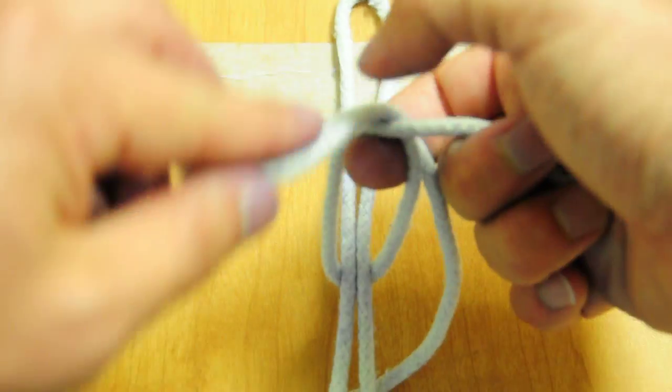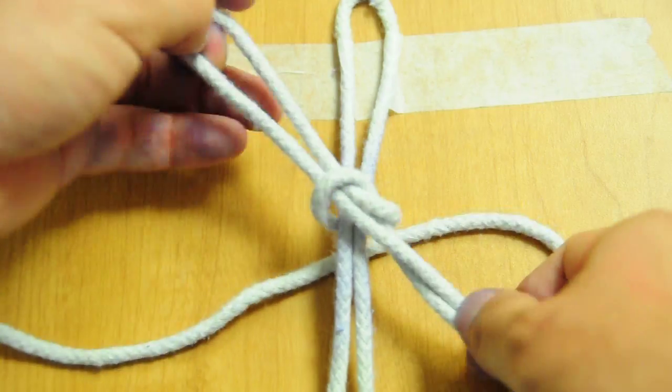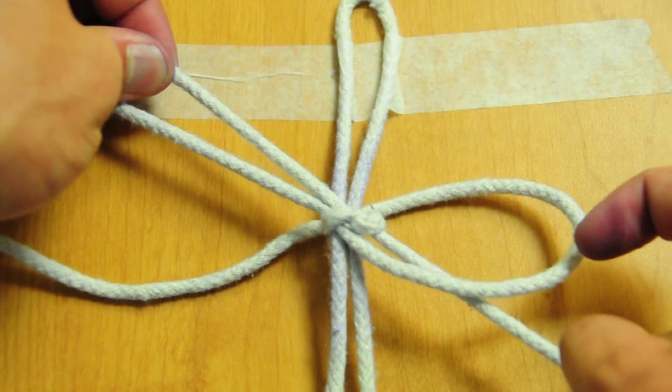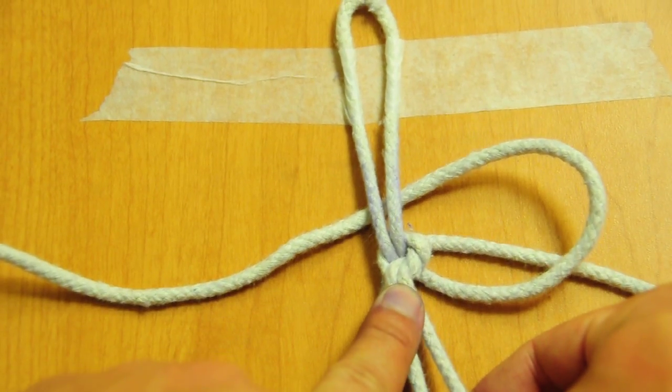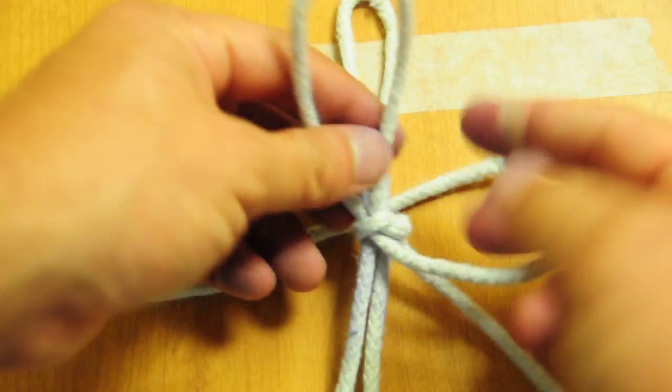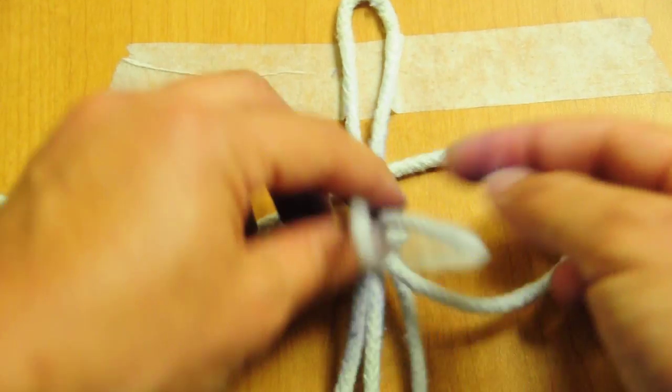If we tie with the loop, what happens is it looks like this. We pass the loop under. And now we have two strands coming through the knot, which makes it a looser knot.